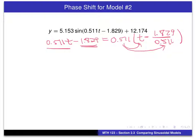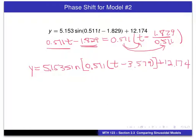So, I've done the factorization correctly. And what that then allows me to do is to write this sinusoidal model in a slightly different form with the .511 factored out. And if I do that computation of 1.829 divided by .511, I get 3.579. And, of course, we've got the plus 12.174.